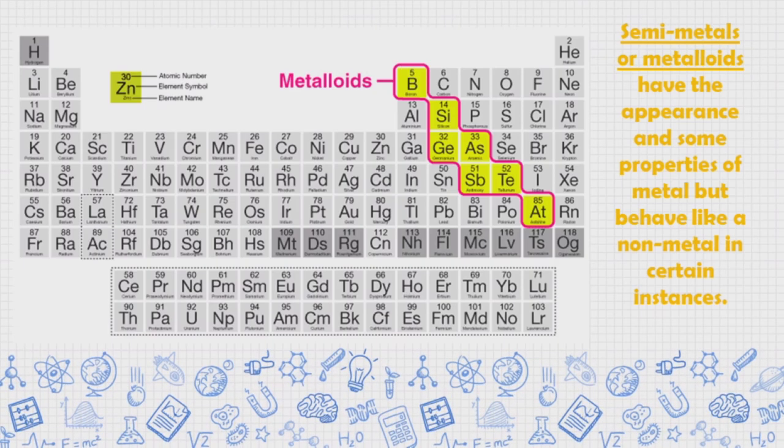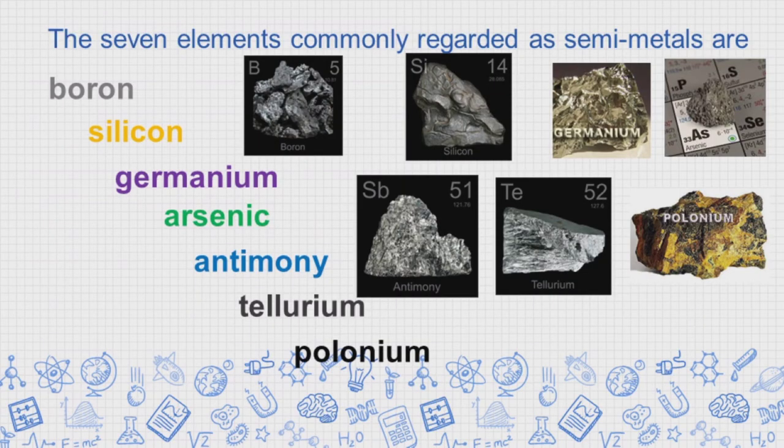Semi-metals or metalloids have the appearance and some properties of metal but behave like a non-metal in certain instances. The seven elements commonly regarded as semi-metals are: